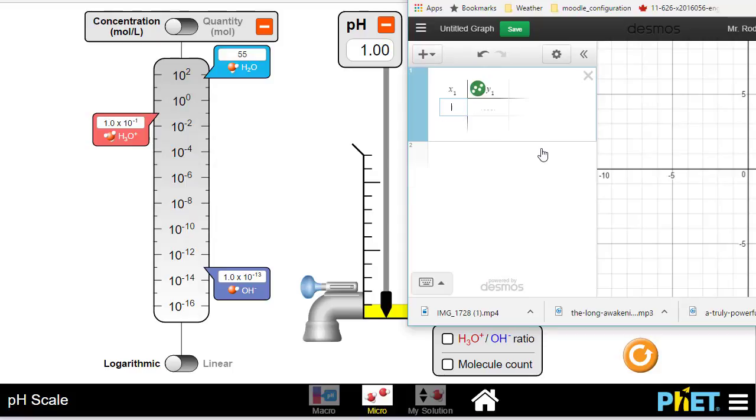The hydronium ion concentration is 1 times 10 to the negative 1, and the pH is 1. Desmos has started to plot what's going on. Notice I'm putting my concentration and pH.